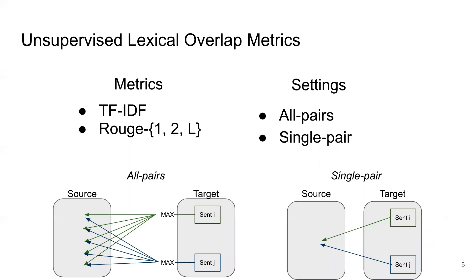Focusing on the lexical overlap metrics first, we look at two different metrics, TF-IDF and Rouge. We test them in two different settings. The all-pairs setting on the left, we compute similarity scores for all source sentences and target sentence pairs, and then we make a prediction for each target sentence as the max score over all the pairs. So you get the TF-IDF encoding for target sentence i, compute its cosine similarity to all the different source sentences, and then take the max score as your prediction.